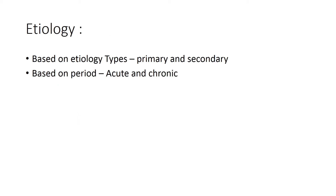Regarding etiology, we divide it into two categories: primary and secondary. Primary lung abscesses usually arise from aspiration, are principally caused by anaerobic bacteria, and occur in the absence of underlying pulmonary or systemic conditions. Secondary lung abscesses arise in the setting of underlying conditions such as post-obstructive processes like bronchial foreign body or tumor, or systemic processes such as HIV or other immunocompromising conditions.